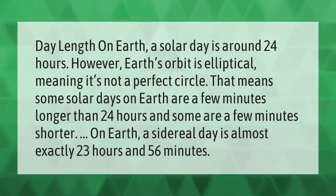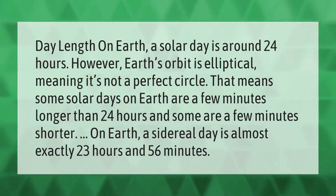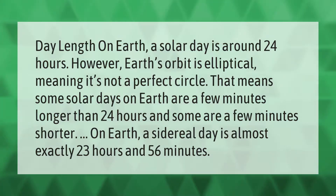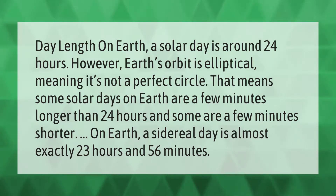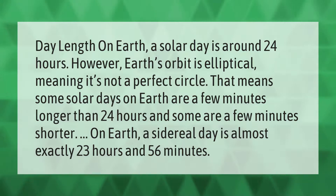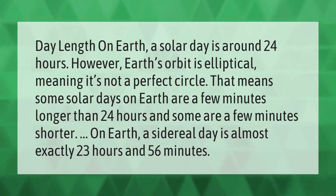A solar day is around 24 hours. However, Earth's orbit is elliptical, meaning it's not a perfect circle. That means some solar days on Earth are a few minutes longer than 24 hours, and some are a few minutes shorter. On Earth, a sidereal day is almost exactly 23 hours and 56 minutes.